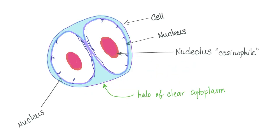The Reed-Sternberg cell is a large cell with two nuclei. Each nucleus has a prominent eosinophilic nucleolus. Around the nuclei is a halo of clear cytoplasm, just like the owl eye directly looking at you.